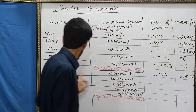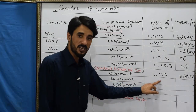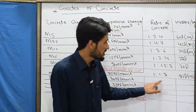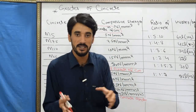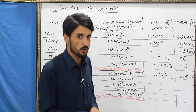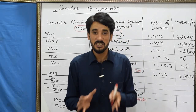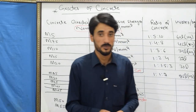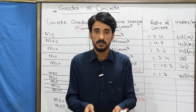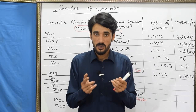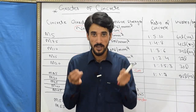For M30 and above, the ratio is not defined and the quantity of water is also not defined. This is special concrete. There are two types of mix: one is called nominal mix and the other is called design mix.